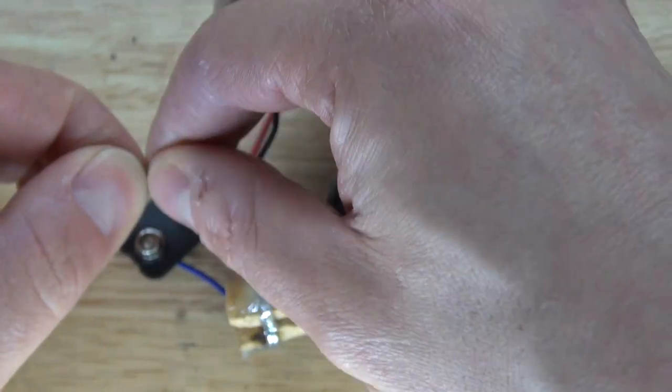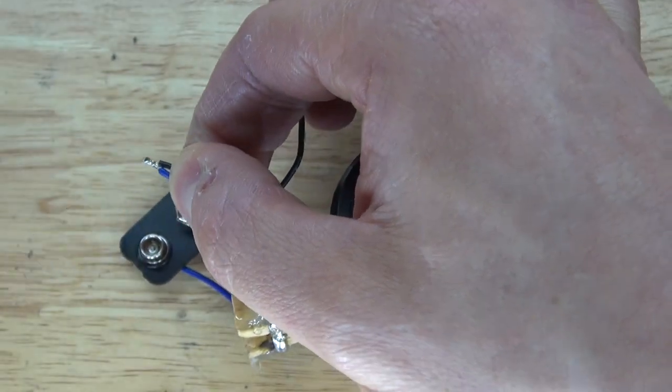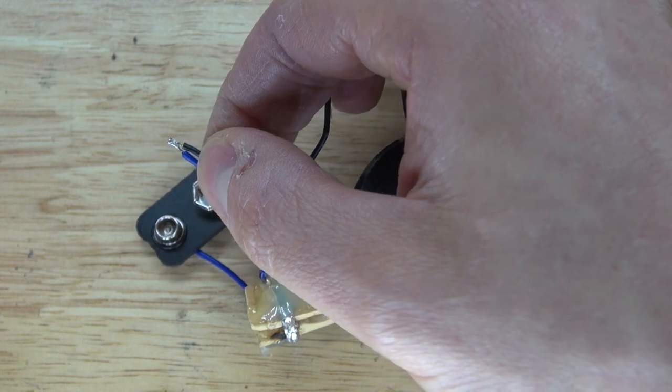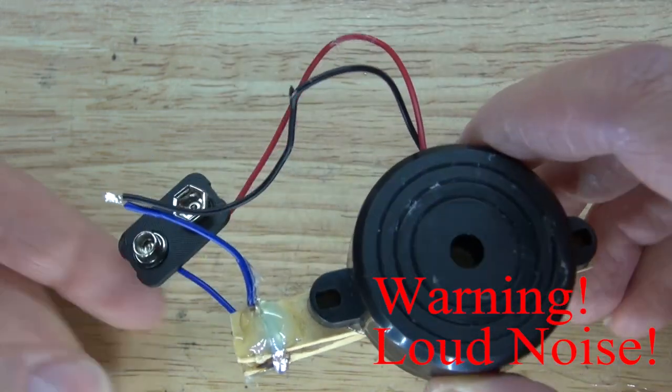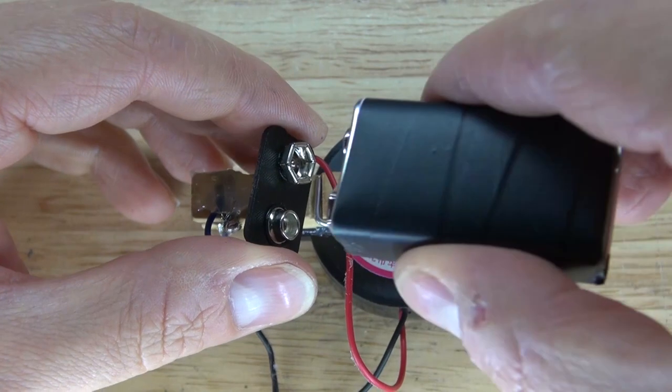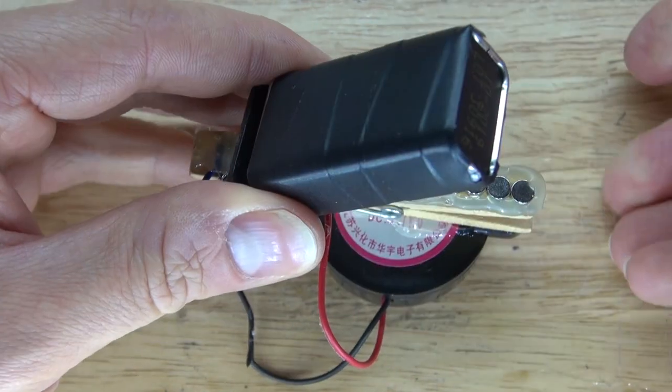And whenever the clothespin opens, it becomes an open circuit. When I close the clothespin, it'll become a closed circuit. And as you can see, the circuit's not complete. So now I'll go ahead and take the battery. And there, it worked.